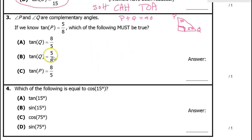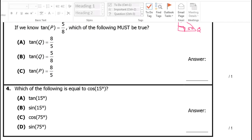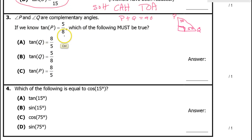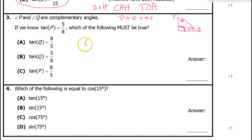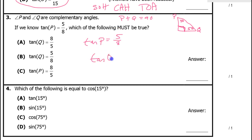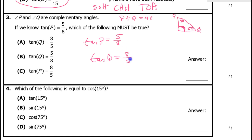Now we're ready to answer problems 3 and 4. For complementary angles and tangent, we use the tangent rule. If the tangent of p equals 5 over 8, that means the tangent of q will equal 8 over 5. That's why the answer is A.